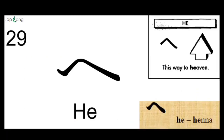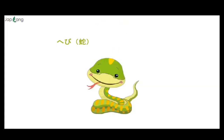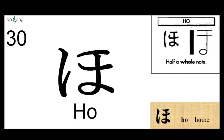Next is HE. This way to heaven — this is HE. HE is written as one stroke, starting from the left. HE as in Hebi — Hebi means snake.